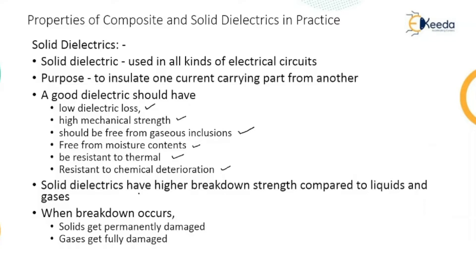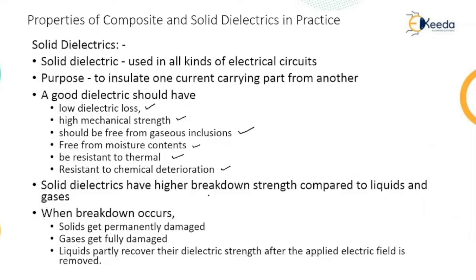Solid dielectrics have higher breakdown strength compared to liquids and gases. When a breakdown occurs, solids get permanently damaged, whereas gases get fully damaged. The advantage of using a liquid is that it partly recovers its dielectric strength after the applied electric field is removed. When a solid dielectric is permanently damaged, it needs to be replaced with new material.